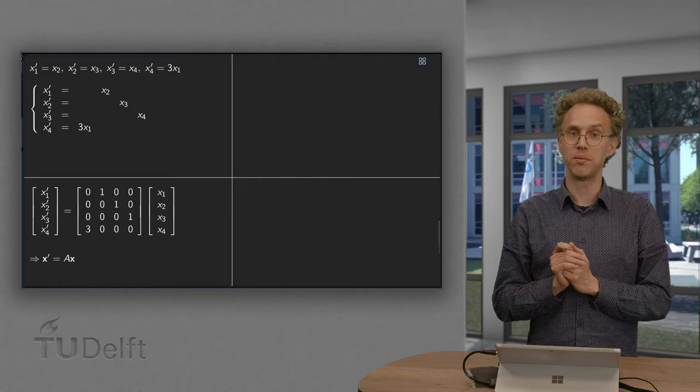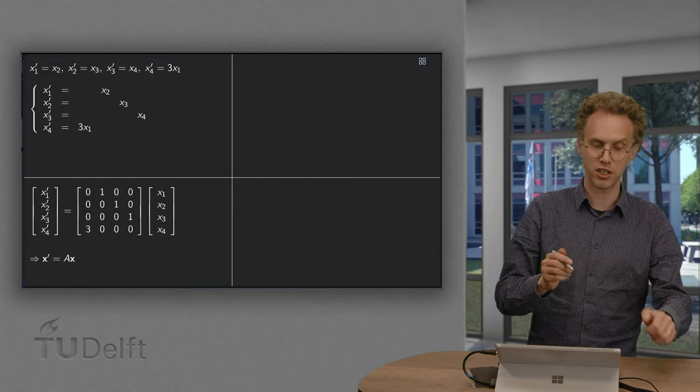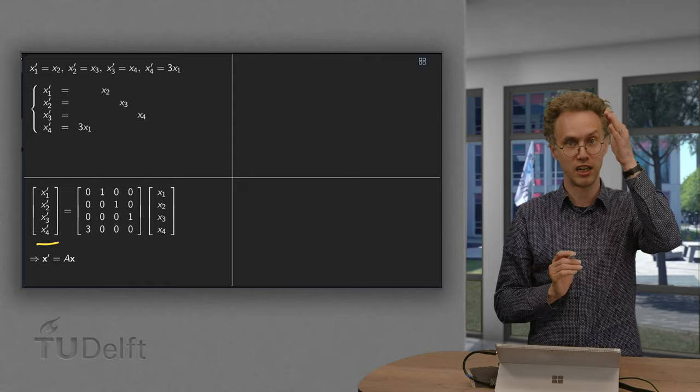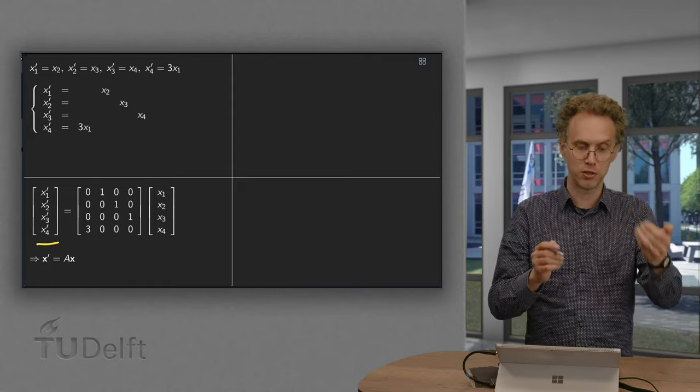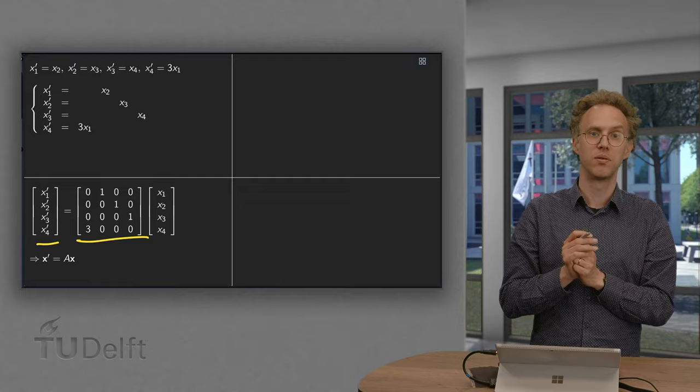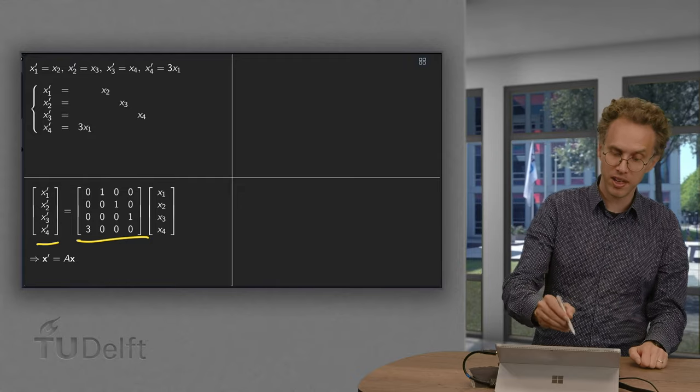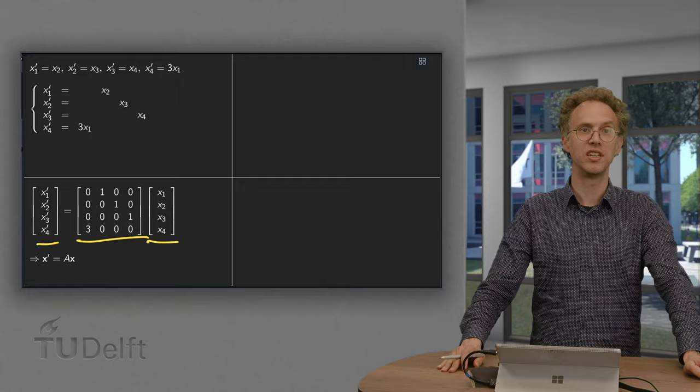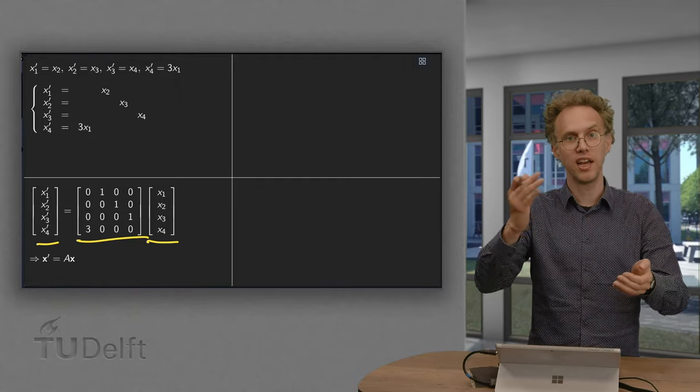Or we can write them in a matrix form where we have a vector x containing x1, x2, x3 and x4. So, x prime equals this matrix A, which contains some numbers, most of them 0, times x. So, here we have written our fourth order equation in the form x prime equals A times x.